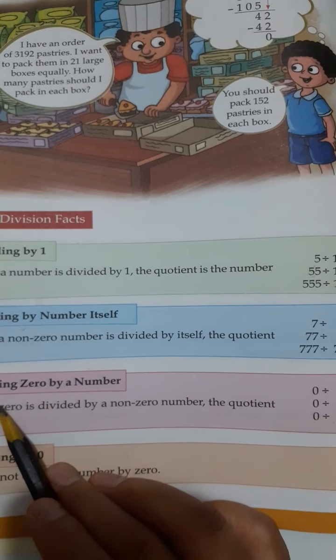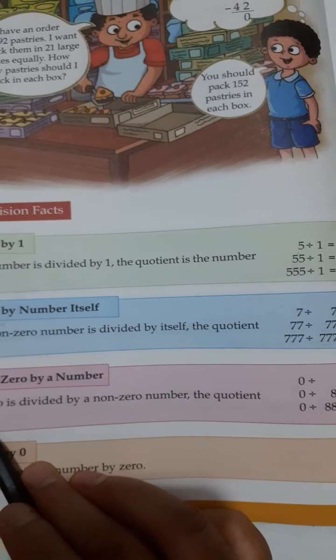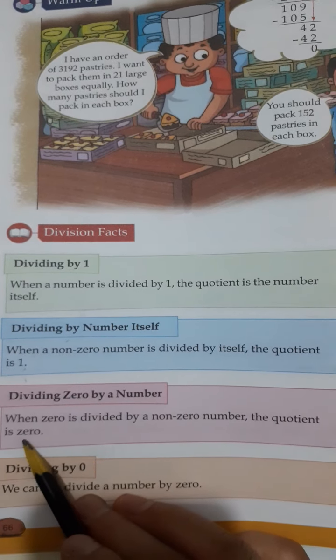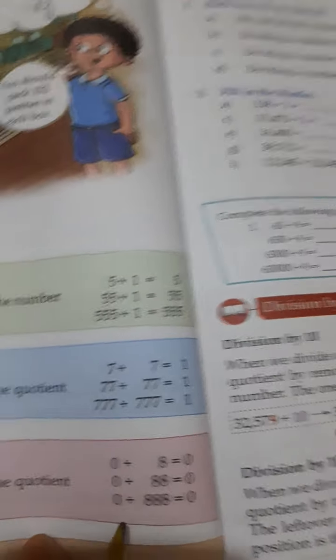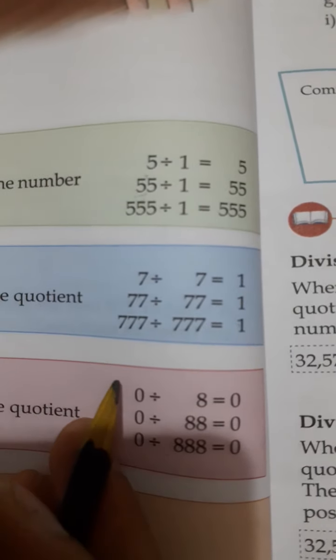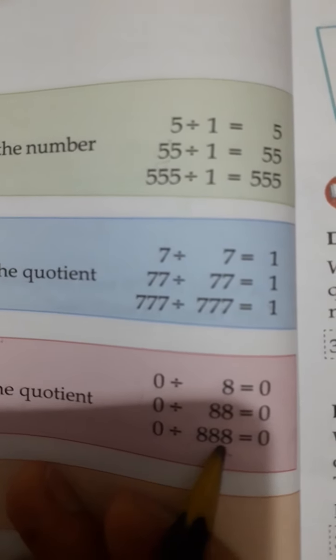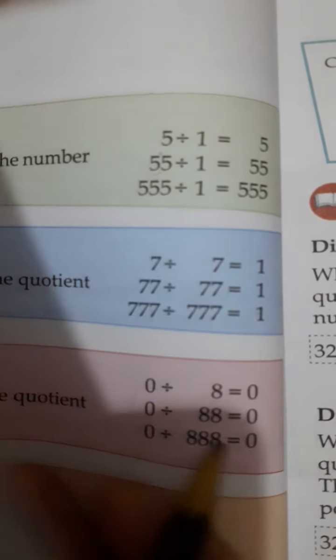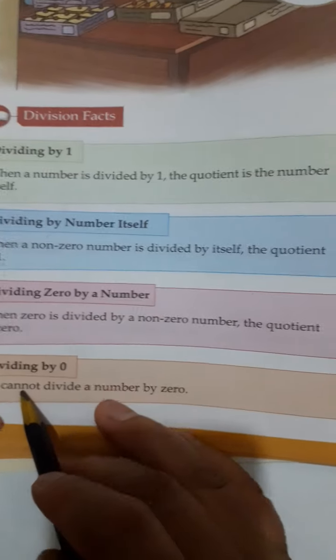Now, dividing 0 by a number. When you are dividing 0 by any number, the quotient should always be 0. See, here, the example is there. These 3 zeros are divided by different numbers, but the answer should be always 0.